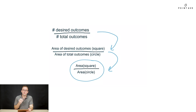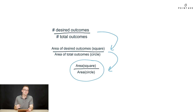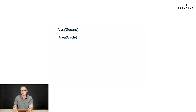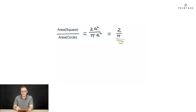On the SAT, the problem would probably ask us to calculate those areas, but we'll be doing geometry later, so fortunately the numbers are given to us — we just need to plug in. When we plug in, we evaluate that our ratio, our probability, just becomes 2 over π, and that is our final answer.